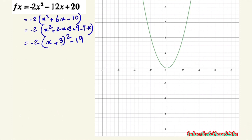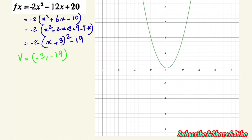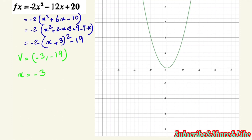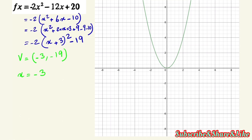Now let's apply all the transformations. First, we have a = negative 2. So the graph is going to be stretched — because the absolute value of a is 2, which is greater than one, the graph will be narrower.